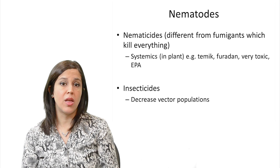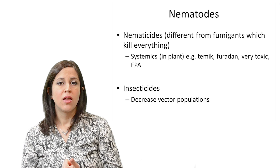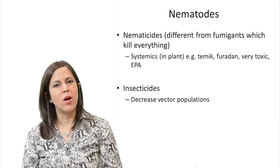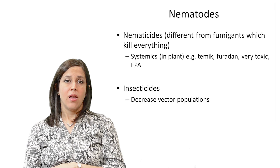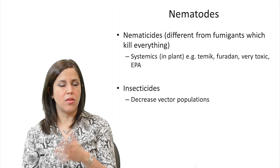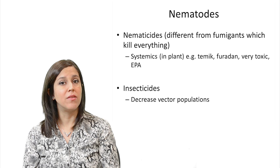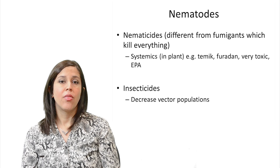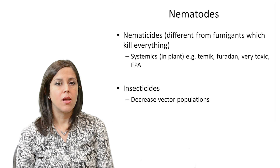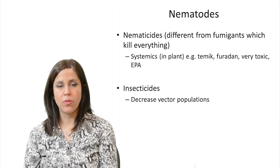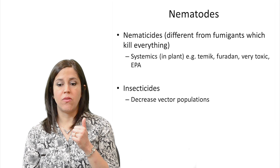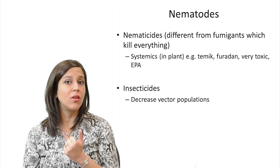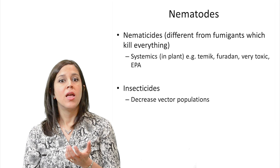Nematicides differ from fumigants, which kill everything. Some systemics like Temik and Furadan are very toxic and require EPA permits; some are no longer on the market. Newer chemistries are being introduced, but many highly effective nematicides were banned in the U.S. due to toxicity. Insecticides are very important for decreasing vector populations — in the case of HLB, since there is currently no cure in infected trees, the only way to control disease spread is to control the psyllid vector.